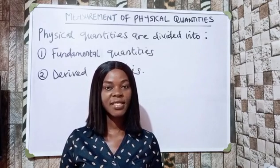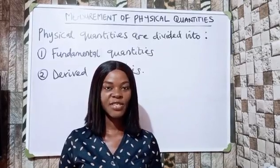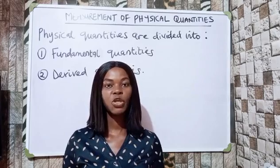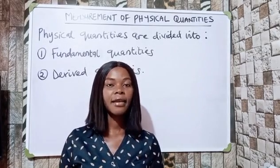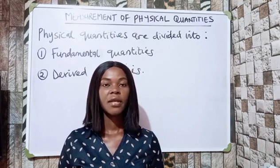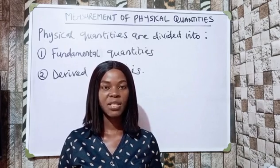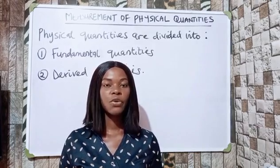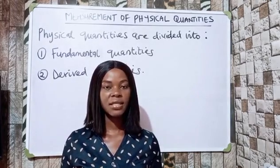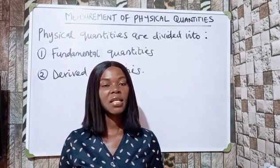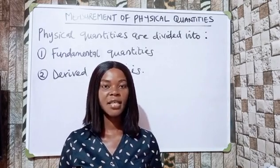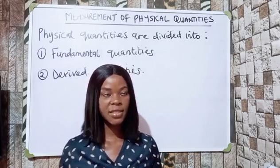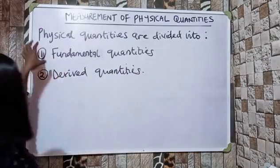What are physical quantities? Physical quantities are things or quantities that we can measure. In physics, if a quantity is not measured it cannot be quantified or certified, and most times we use units to certify certain quantities.